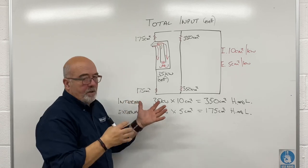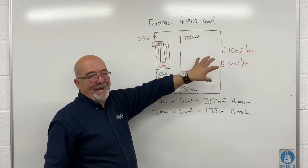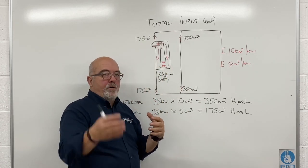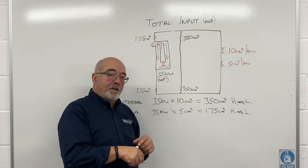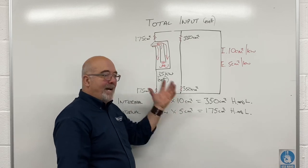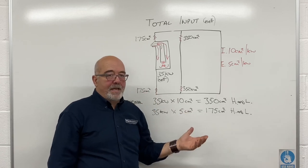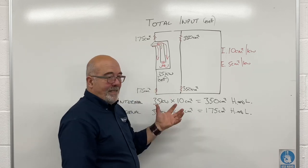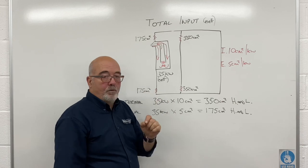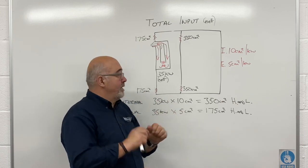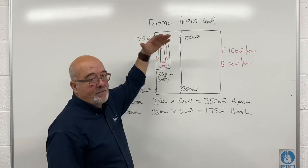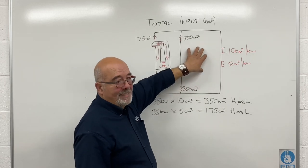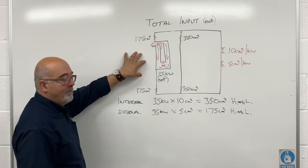Remember why the figures differ: internal air is normally warmer than external air, so you need a bit more air movement to keep the temperature down in the compartment. Again, check the manufacturer's instructions — the majority for the last ten years or so haven't needed compartment ventilation up to a certain input, but do check. It is as straightforward as it looks: total input multiplied by 10 internally, multiplied by 5 externally.